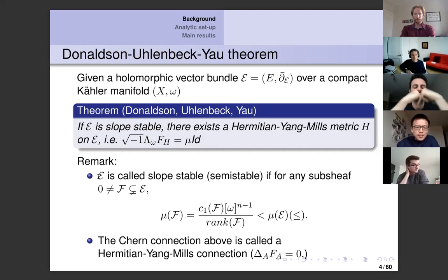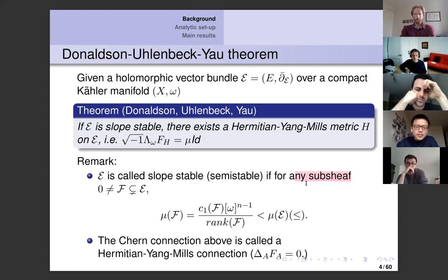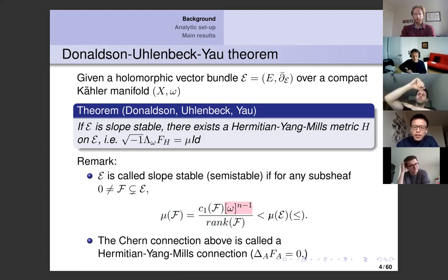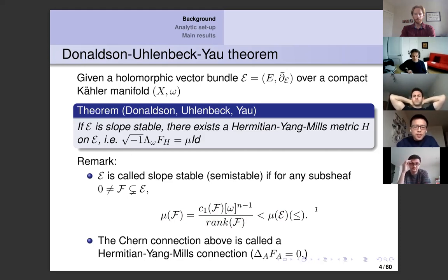Let me define slope stability. It means that if you look at all sub-bundles with singularities and compute the average of the first Chern class by integration with respect to the Kähler form, the slope of any sub-bundle is strictly smaller than the slope of the ambient sheaf E. In this case we call the bundle slope stable.